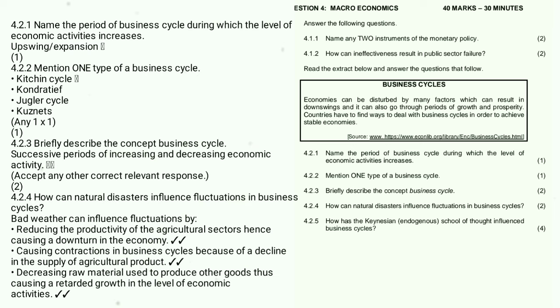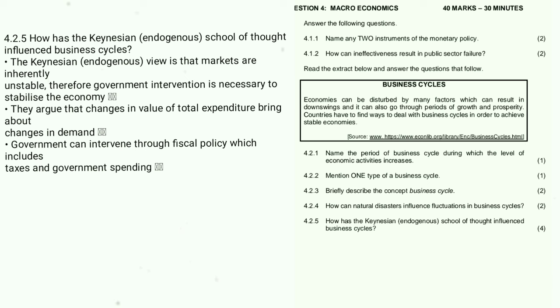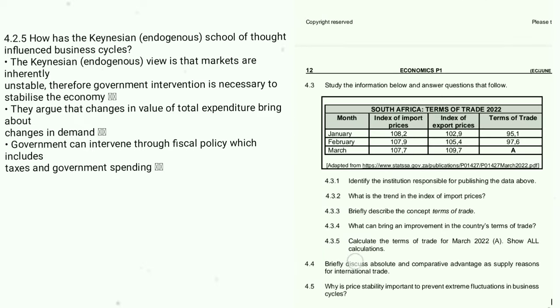4.2.5: How has the Keynesian school of thought influenced the business cycle? Many will get this wrong if they didn't study. The Keynesian view is that markets are inherently unstable, therefore government intervention is necessary to stabilize the economy. They argue that changes in the value of total expenditure bring about changes in demand. Additional answers are shown on screen.